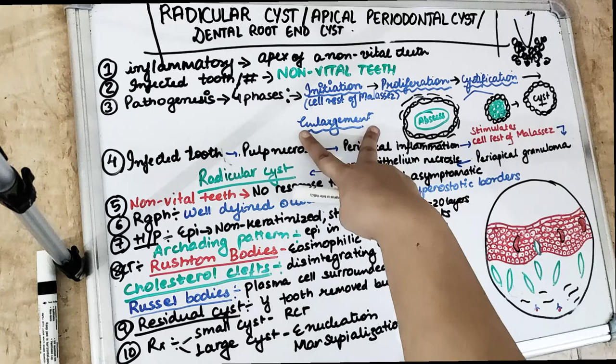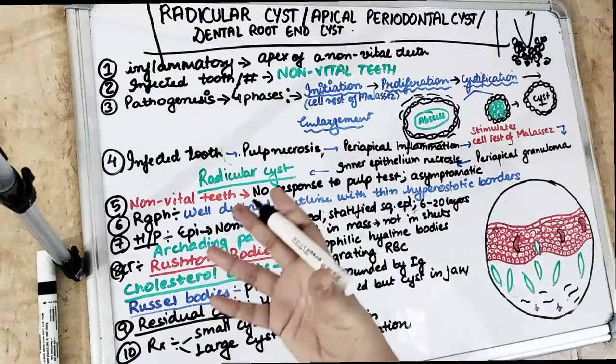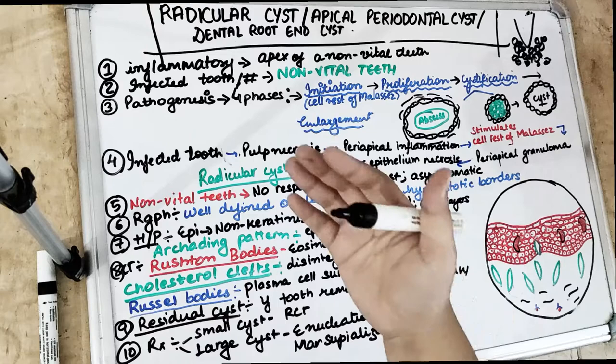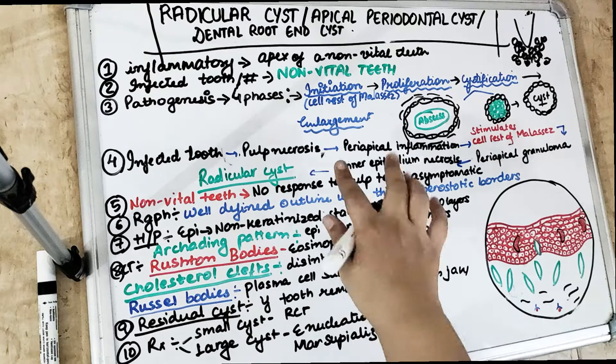Phase four is enlargement. After the cyst is formed, it gets enlarged or bigger in size. This can be due to the enzyme collagenase, bone-resorbing factors like PGE2, or osmotic tension of the cystic fluid — all of which cause enlargement of the cyst.